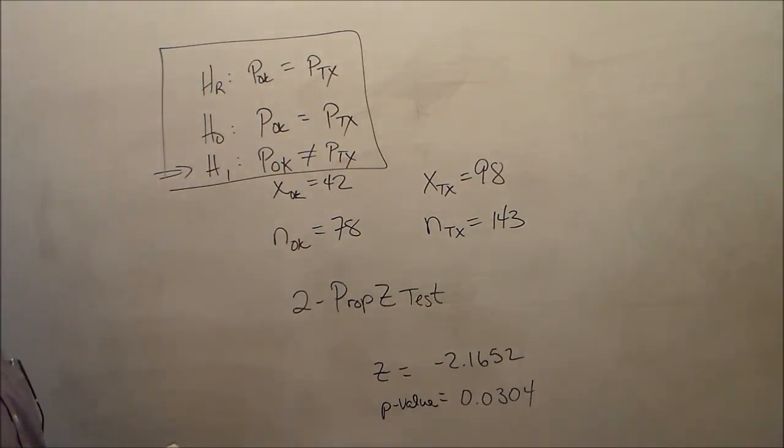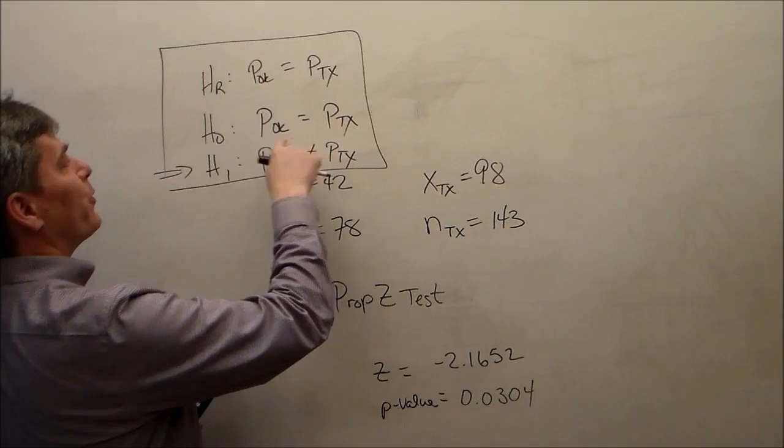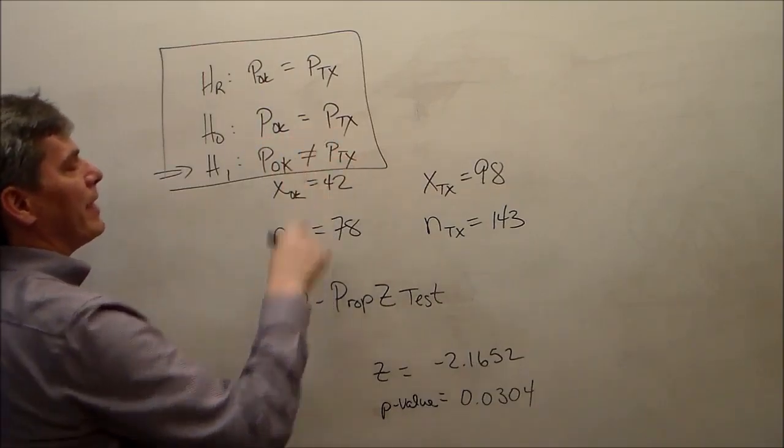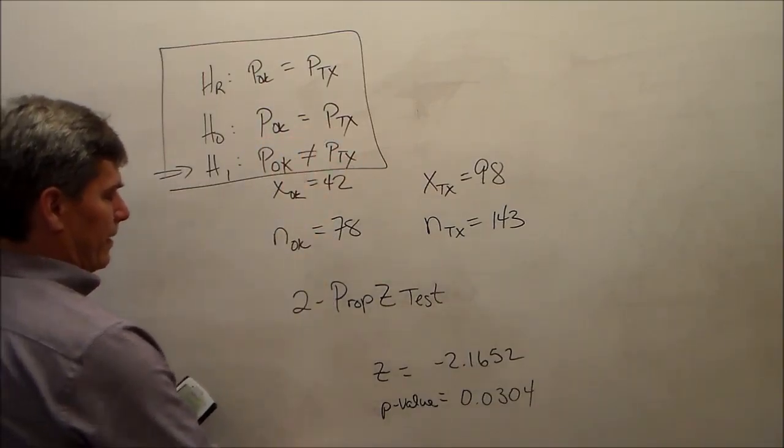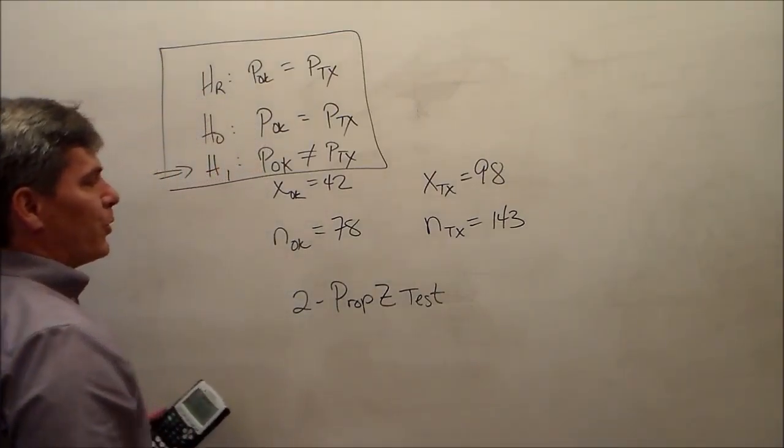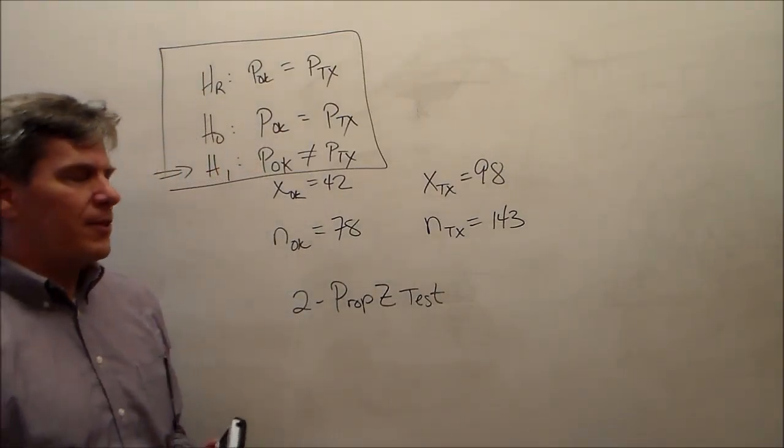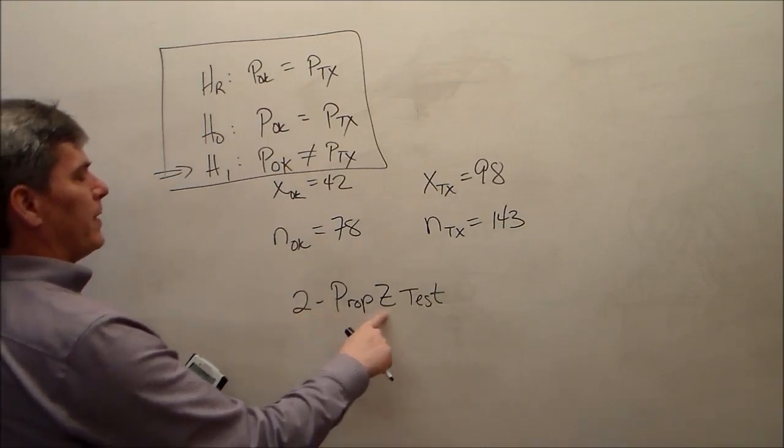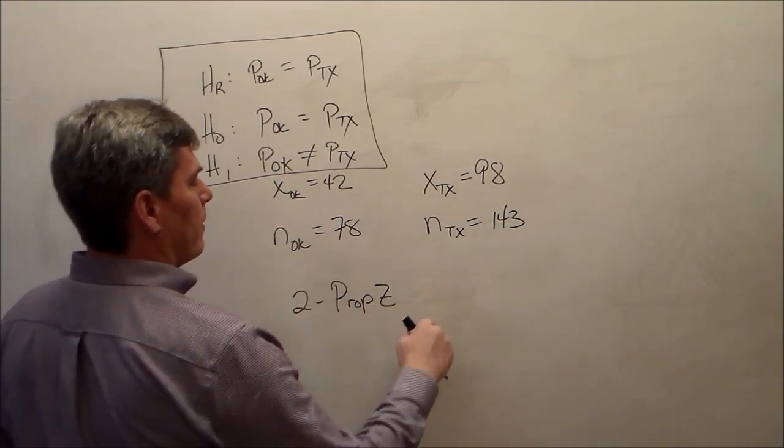And that's part A. Part B is, using the same information, construct a confidence interval for that difference. Construct a confidence interval for the difference between P Oak and P Tex. Well, that's just as easy. Since we're doing a confidence interval, it's going to be 2 prop z int.